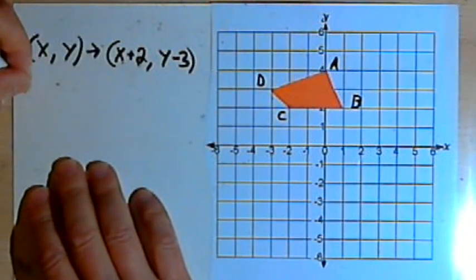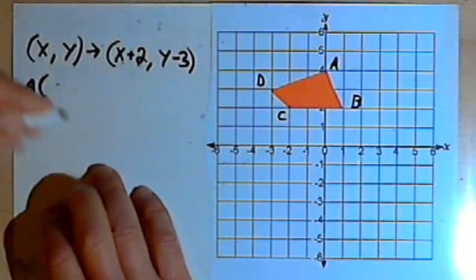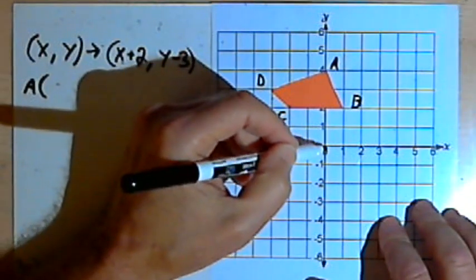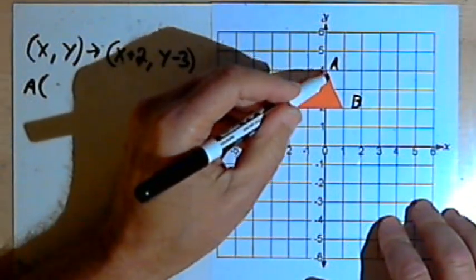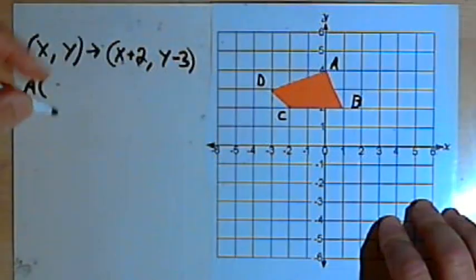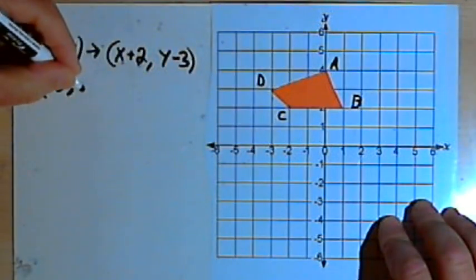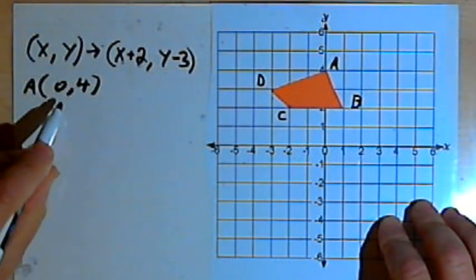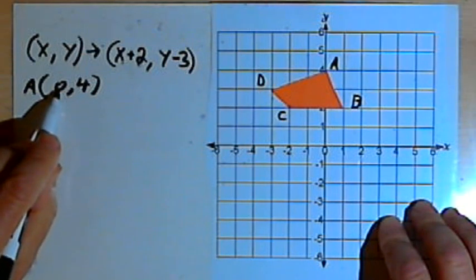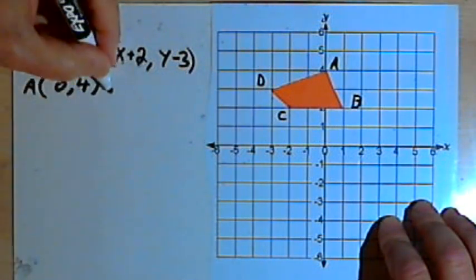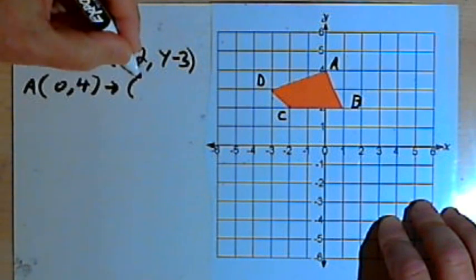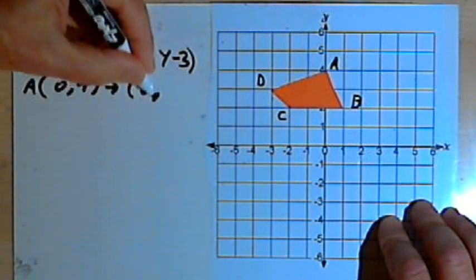So the coordinates for point A are 0 and 4. 0 on the x-axis and 4 on the y-axis. So that's (0, 4). I'm going to take the x-coordinate, which is 0, and my instructions say to add 2 to it. So 0 plus 2 is 2.